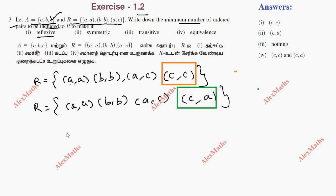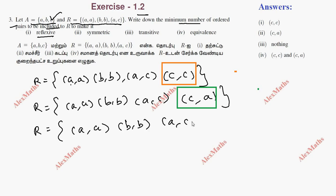Now we have to include (A,A), (B,B), and (A,C). This is already transitive, that is why we include it.